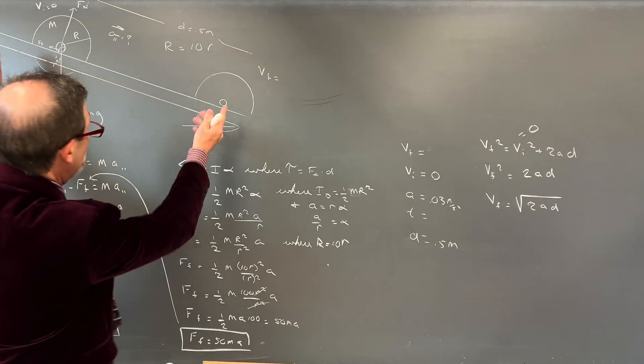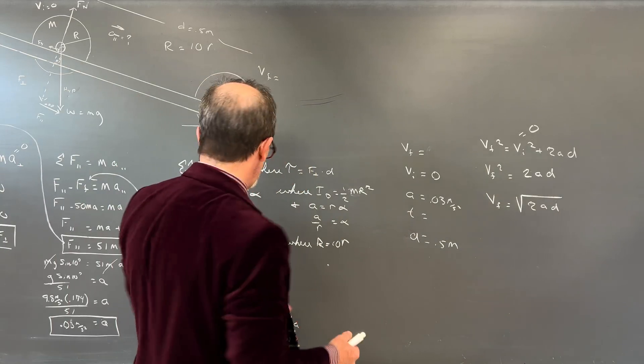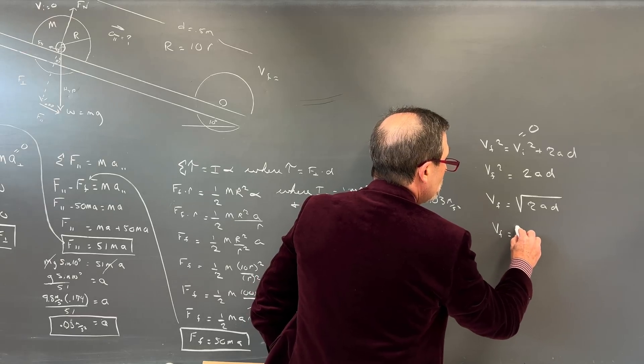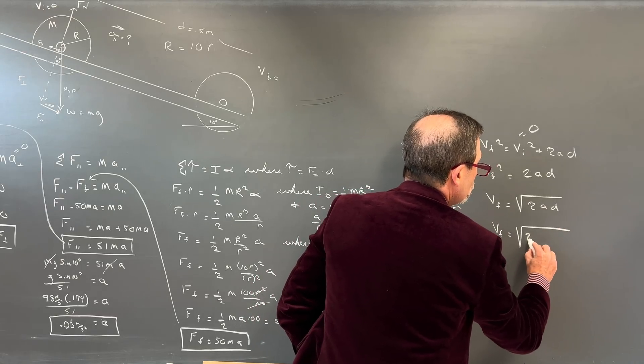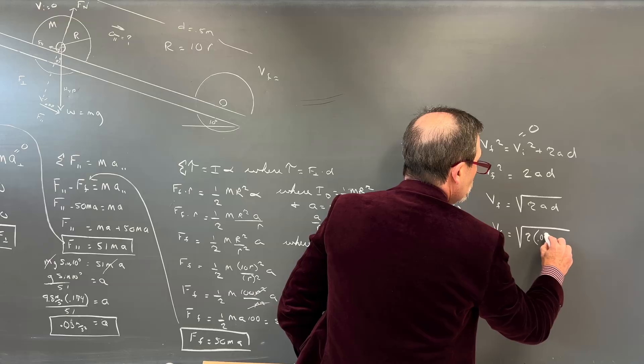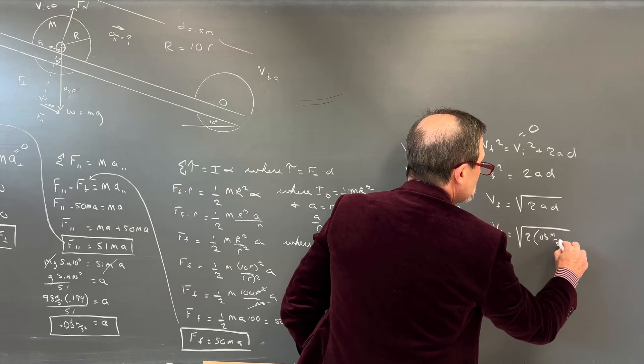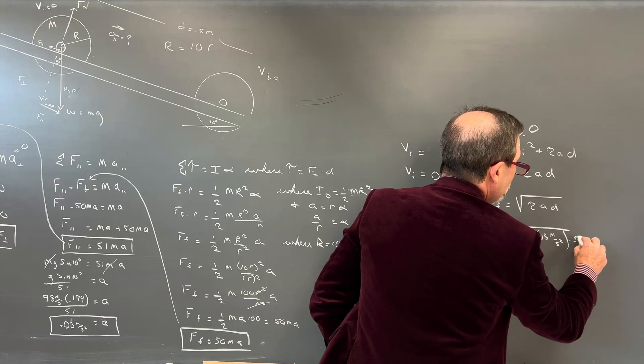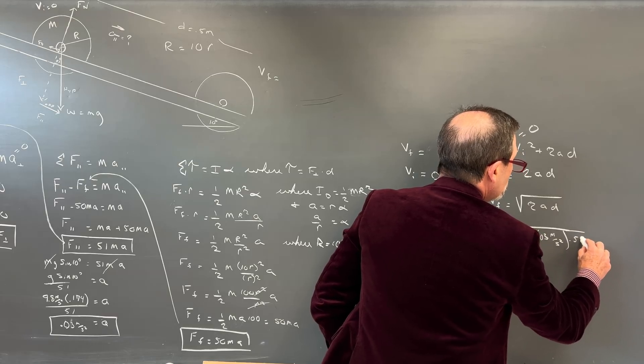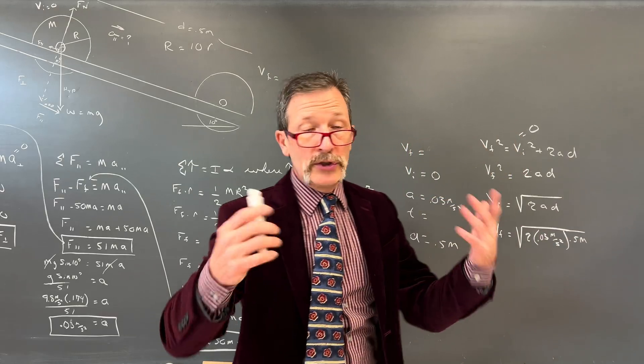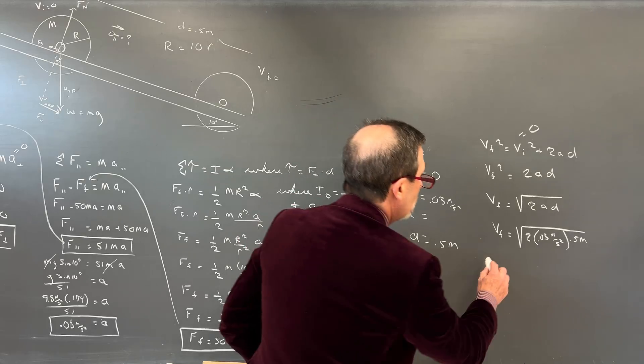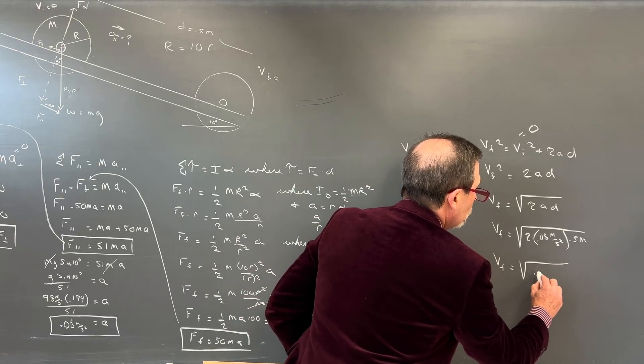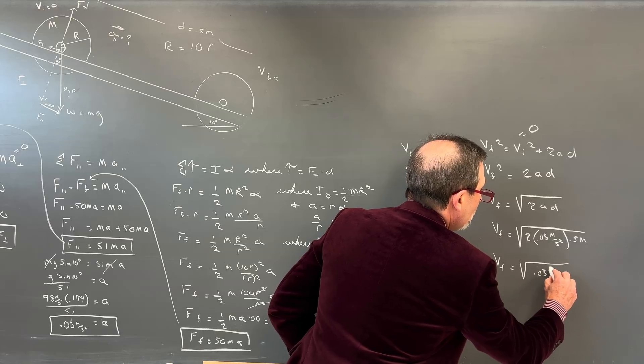Most people know, well, most physics people know that there's three kinematics equations. And many of us know them off by heart, the first, second, or third. If I have VF, and I have A and D, and I want to solve for the velocity initial is 0, and I want to solve for the velocity final without time, I'm going to use equation 2.